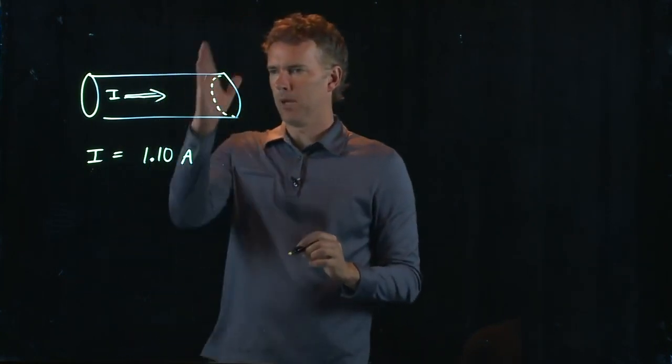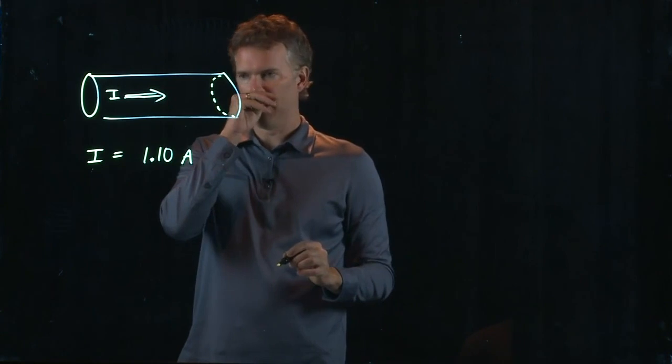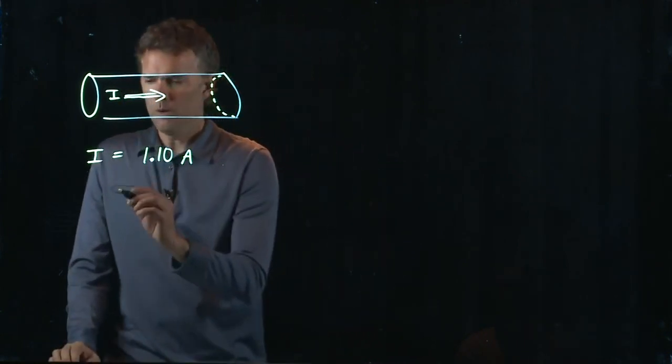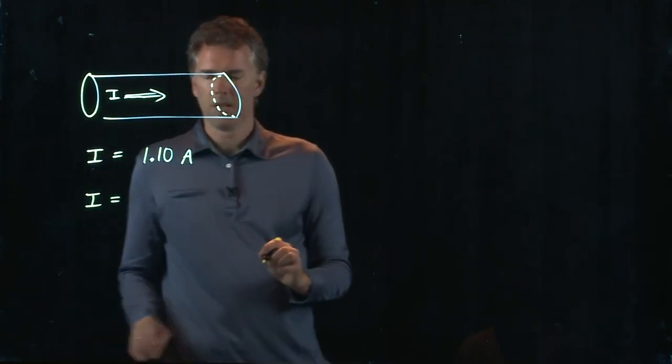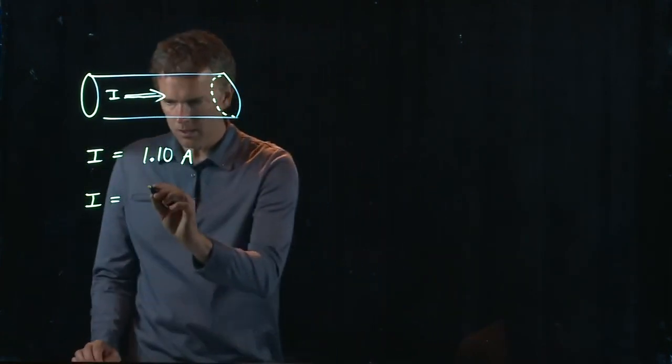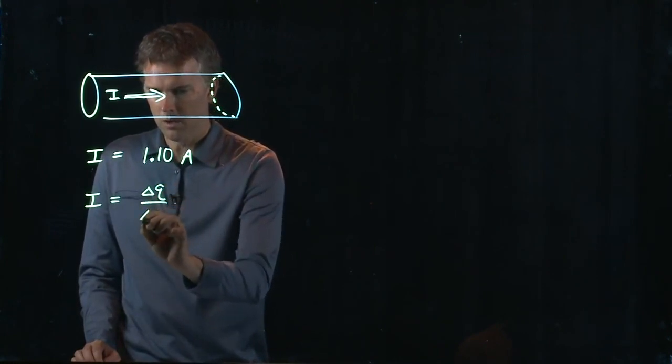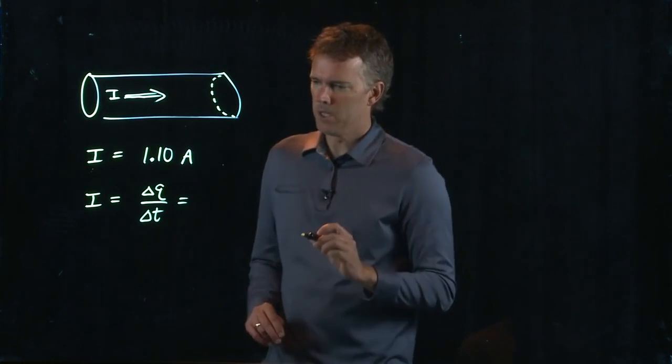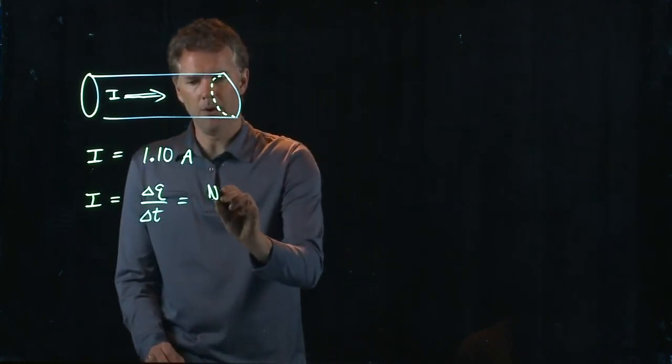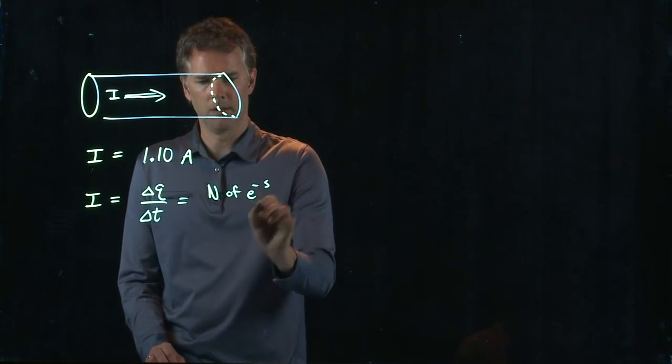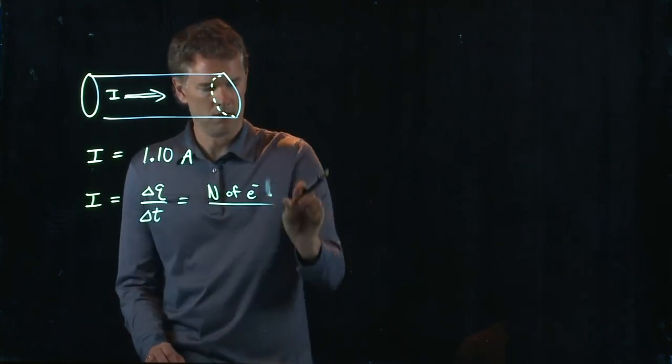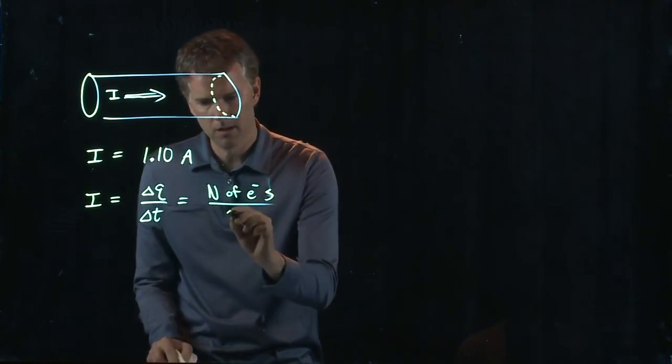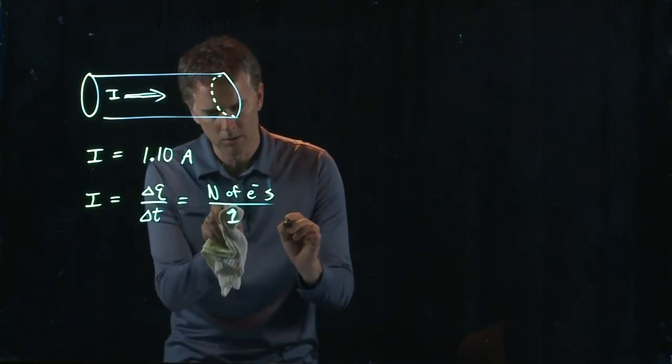All right, pick a point in the wire and say, all right, how many electrons are flowing past it? Well, we probably know that, right? Because I is delta Q over delta T. Which is number of electrons per delta T, which we can just call a second.